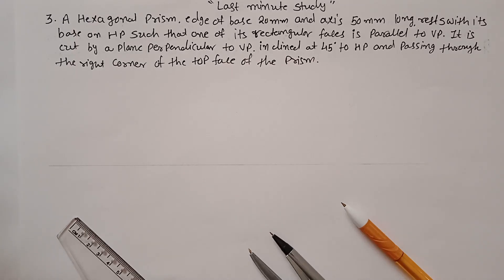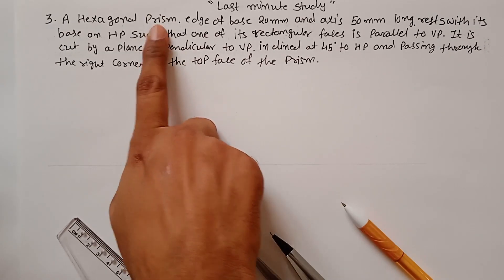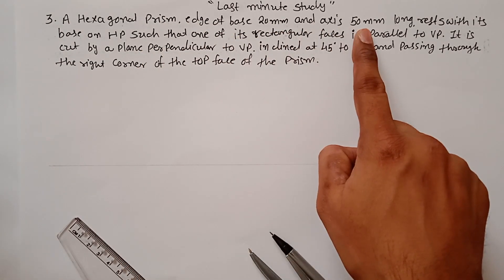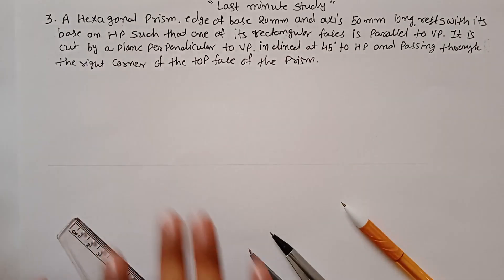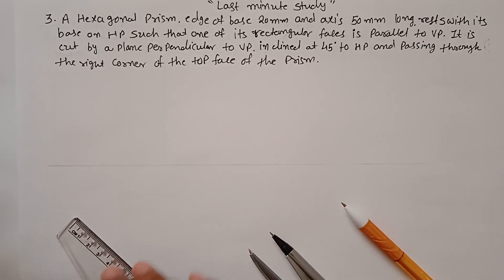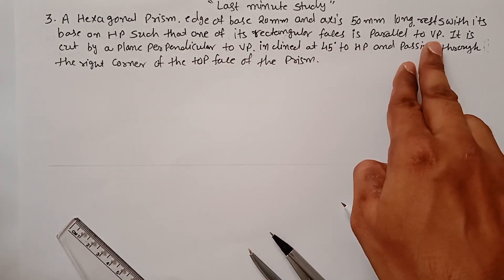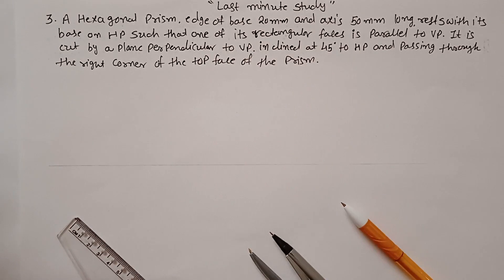Problem number three from development of surfaces: hexagonal prism with edge of base 20mm, axis 50mm long. It is resting with its base on HP, and one of the rectangular faces is parallel to VP. It is cut by a plane perpendicular to VP.